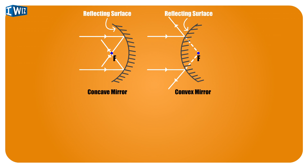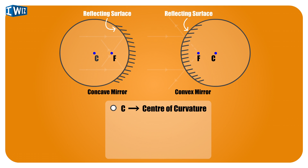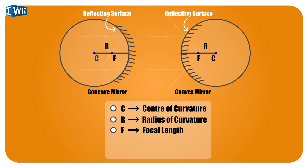This curve is actually a part of a circle, and when you draw the entire circle, the center of this circle is known as the center of curvature. The distance from the center to the lens is known as the radius of curvature. Half of this distance is where the focus point, or the focal point, of the lens is located — if it's a concave lens it's located inside, and if it's a convex lens it's located outside. The line running through the center, the focal point, and the center of the lens is known as the principal axis.